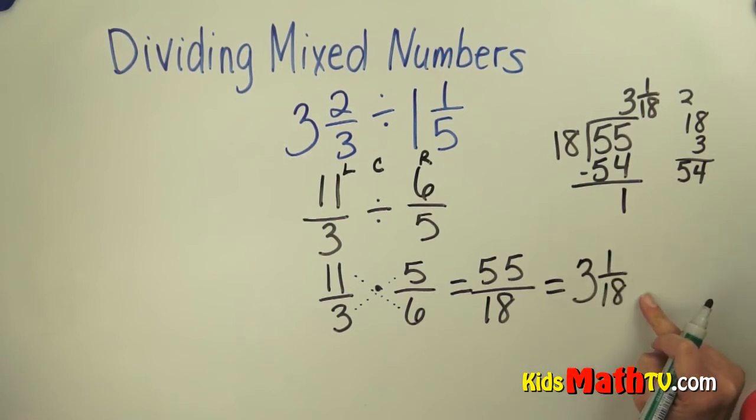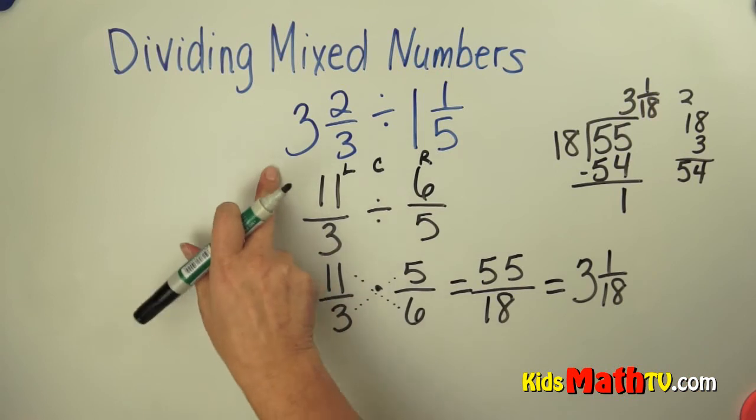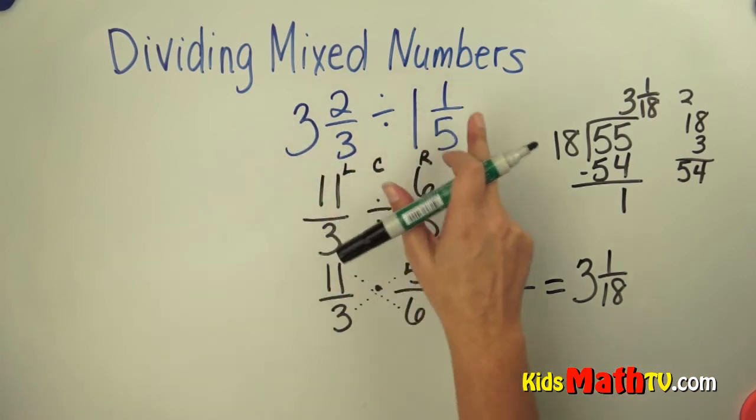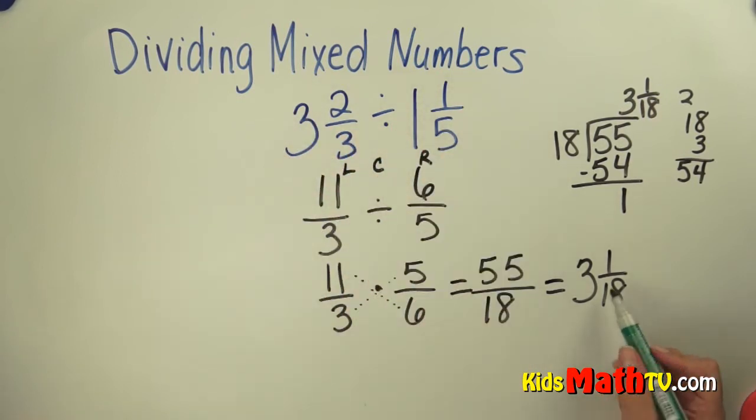And I check to see if I can simplify that answer at all. And it's already 1 over 18. So it is in simplest form. So 3 and 2 thirds divided by 1 and 1 fifth is 3 and 1 eighteenth. That's the end of our lesson on dividing mixed numbers.